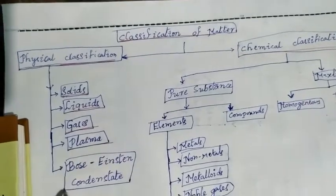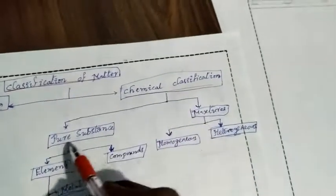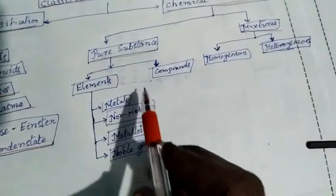Physical classification includes solid state, liquid state, gaseous state, plasma state, and Bose-Einstein condensate state.